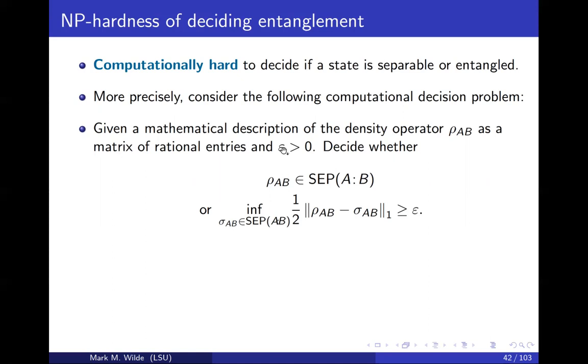To make the statement precisely, let's suppose there's a decision problem where you're given a density matrix as a matrix of rational numbers and there's some error parameter epsilon strictly greater than zero. Your task is to decide whether the state is a separable state or if it's epsilon far from all separable states. That has been shown to be NP-hard to solve, even if epsilon is inverse polynomial in the local dimensions of the state.